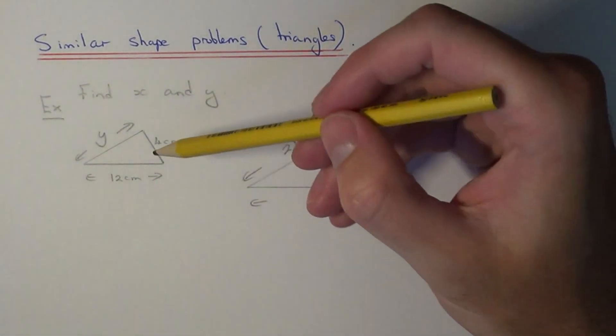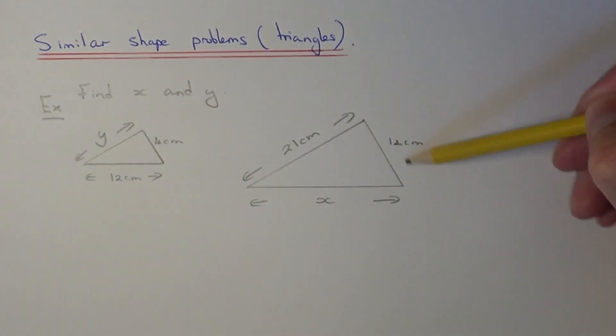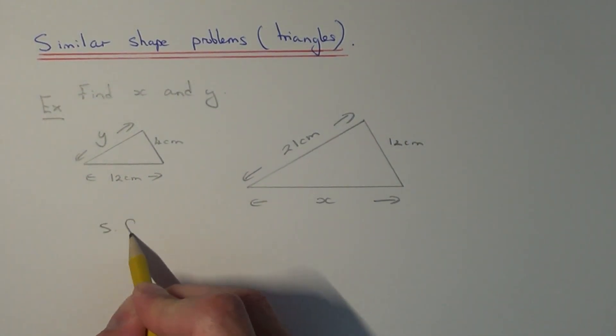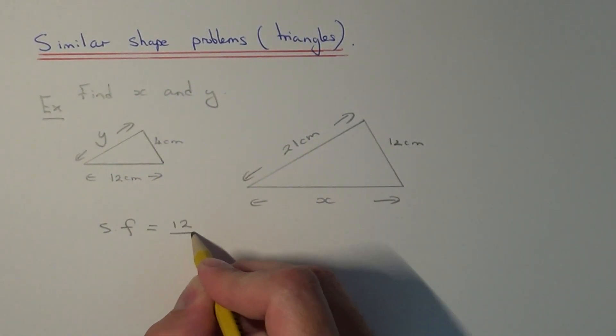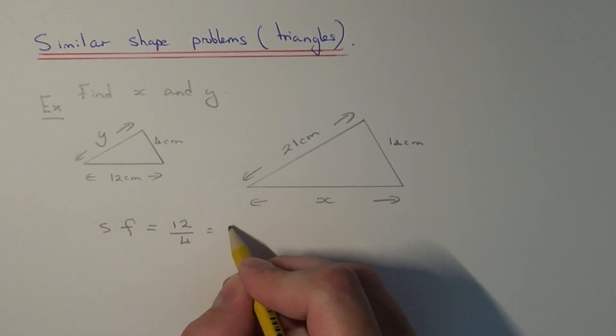So if we look at our triangles, we have this edge and this edge on both triangles. So if we divide the bigger one by the smaller one, this will give us our scale factor of the enlargement. So 12 divided by 4 gives an answer of 3.